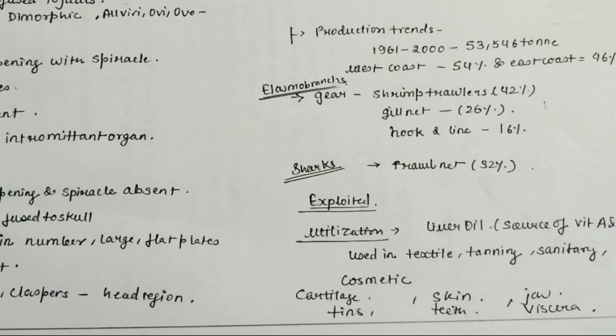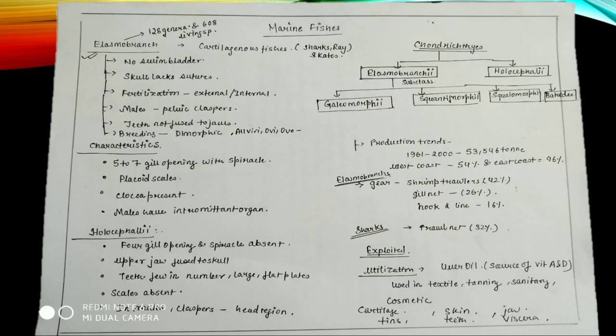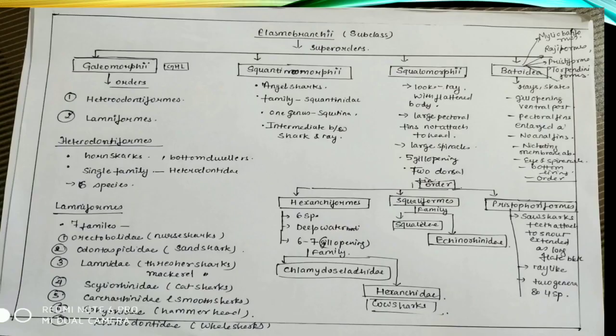For utilization purpose, liver oil is mainly utilized for the source of vitamins A and D. They are used in textile tanning, sanitary products, cosmetics. Cartilage, fins, skin, teeth, shark jaws, and viscera are also used for fish meal preparation. This was the utilization status and main purpose of why Elasmobranchii are mainly caught.